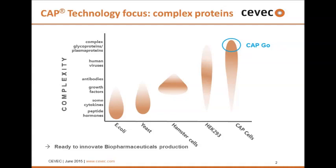What we have is a human suspension cell line that is derived from amniocytes. If you look at the current platforms out there to produce biotherapeutics, you can see that with the increase in complexity of these molecules on the x-axis, you need to have the appropriate expression system. For peptides and lower molecular substances, E. coli and yeast are very capable. CHO cells derived from hamster are the platform suited for antibodies. And for human viruses and complex glycoproteins, you need different systems.